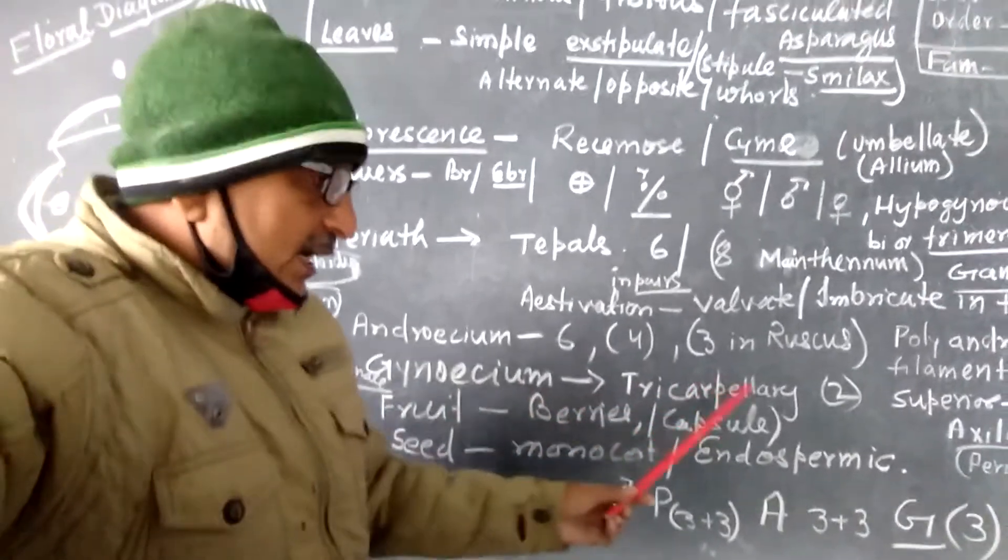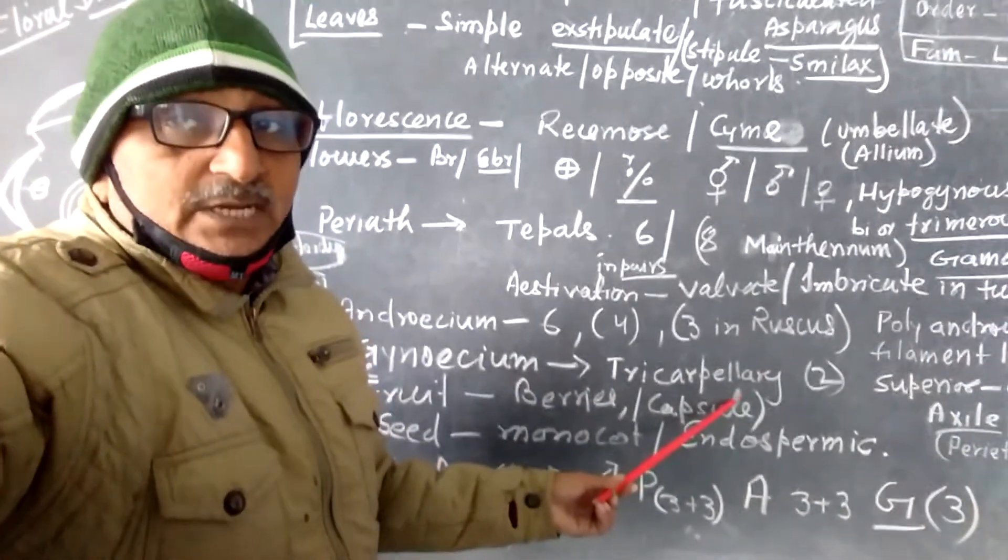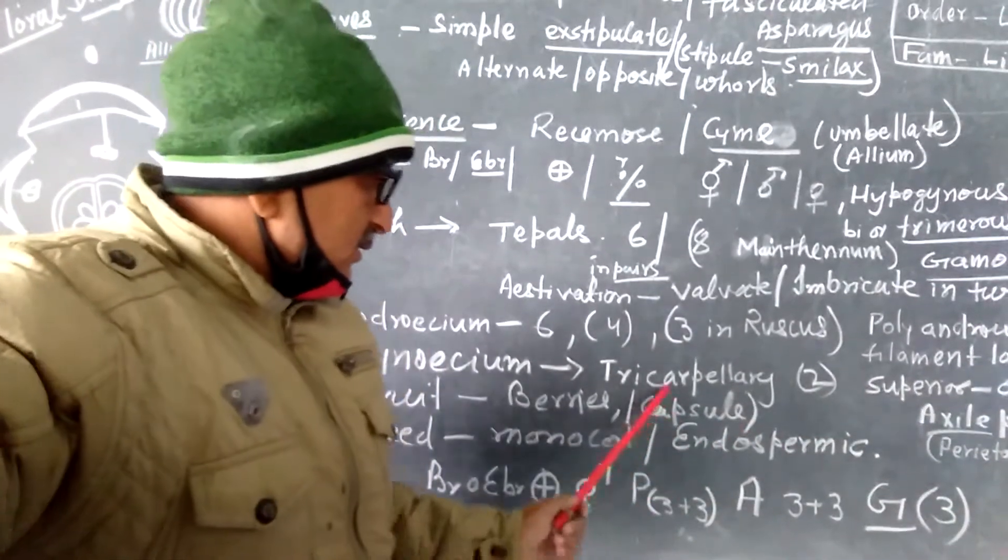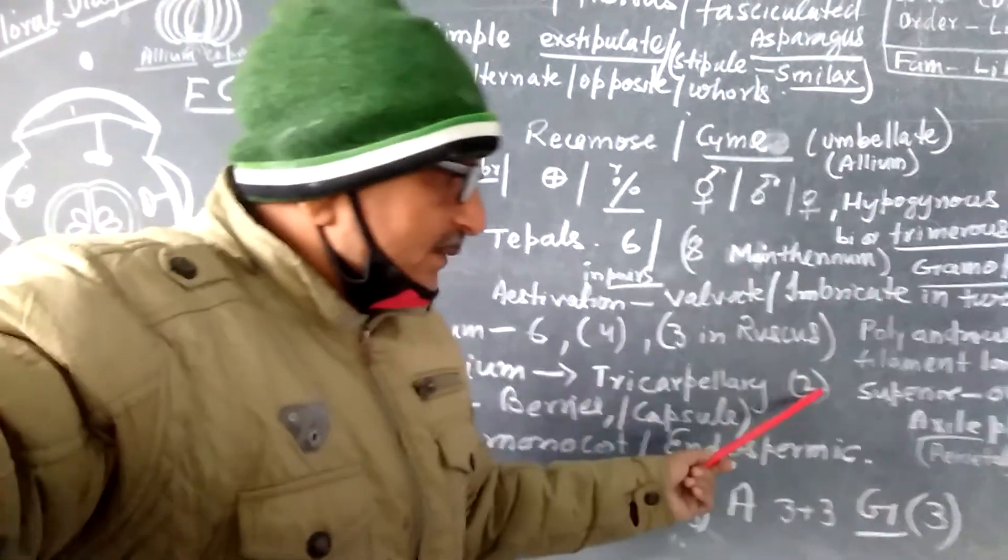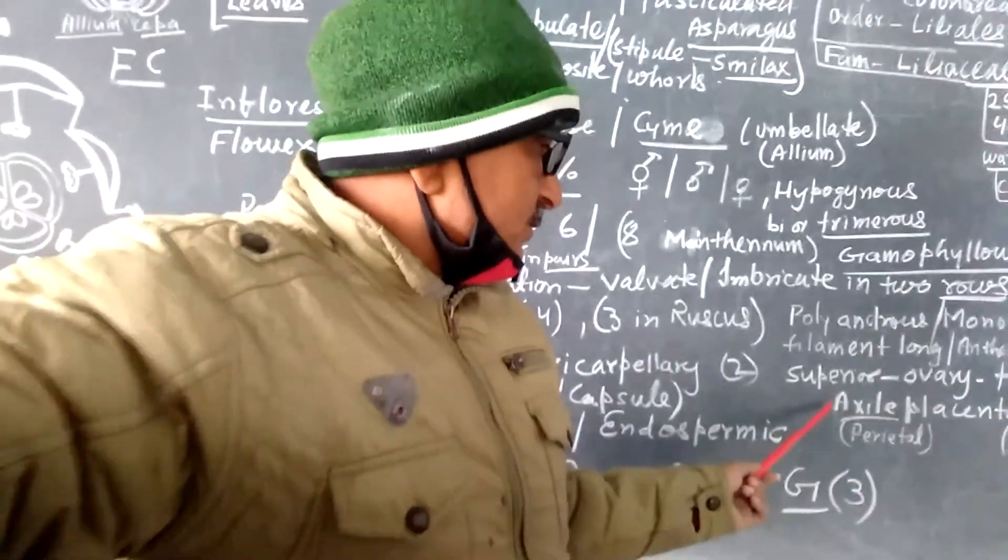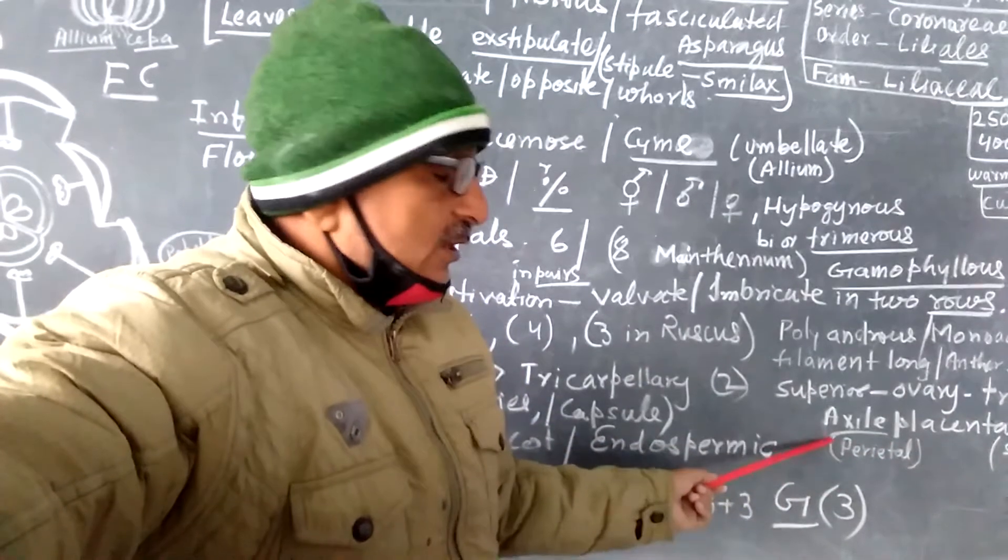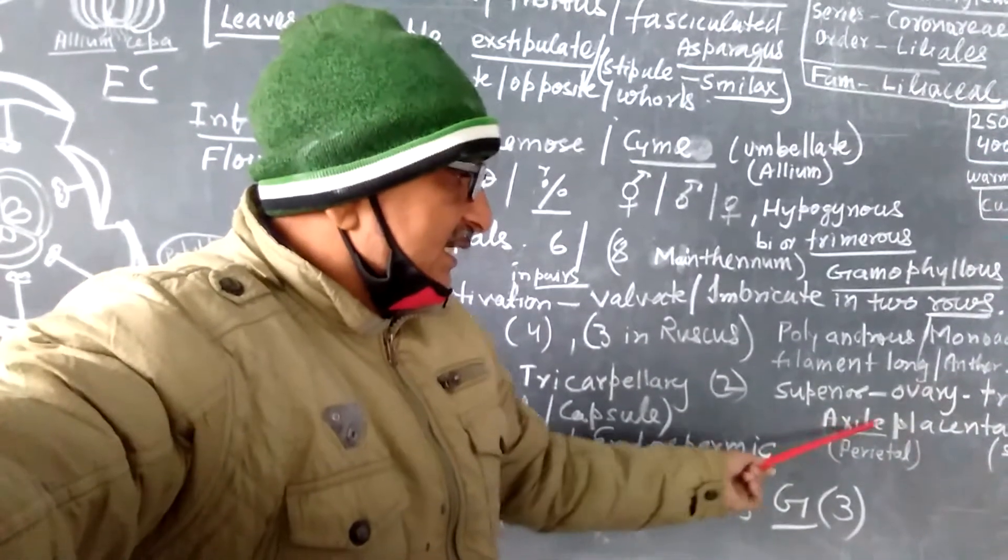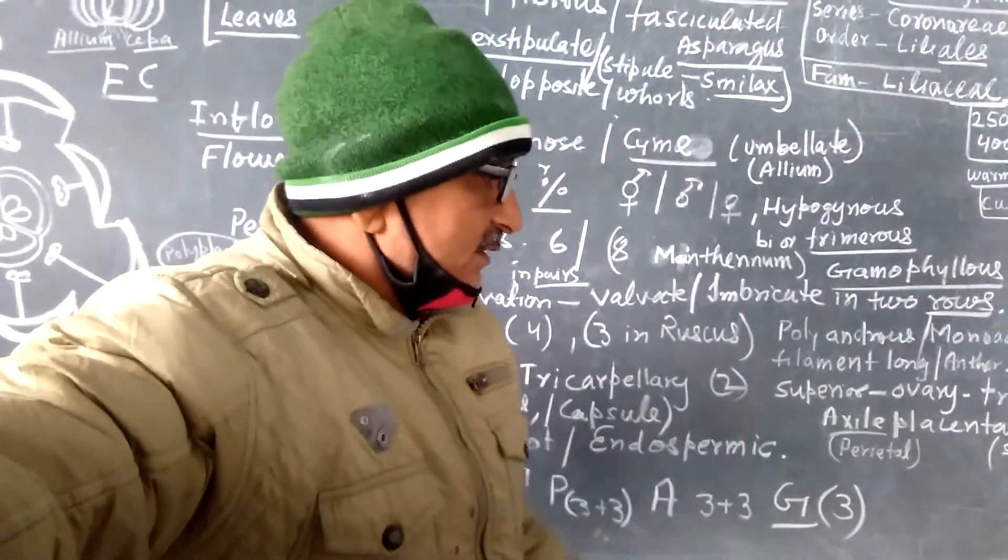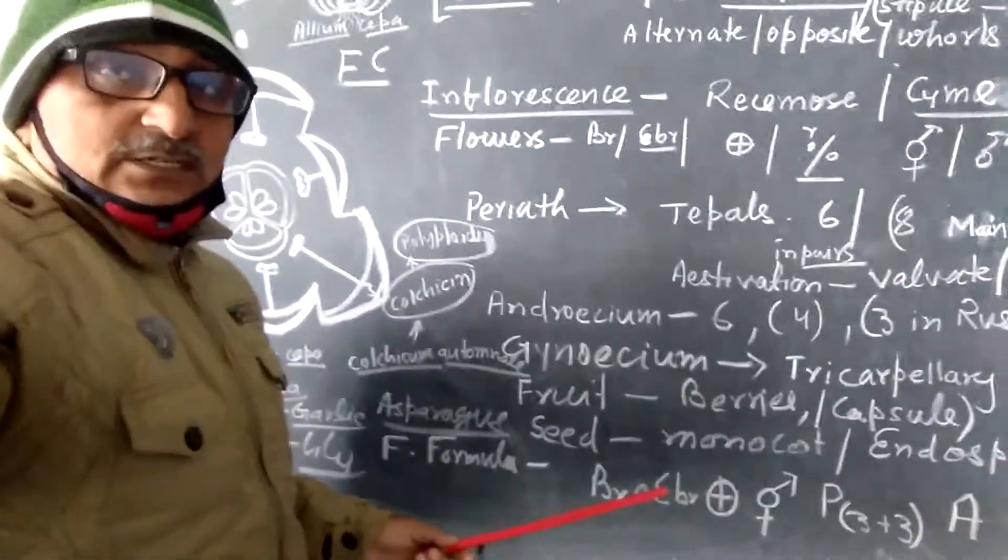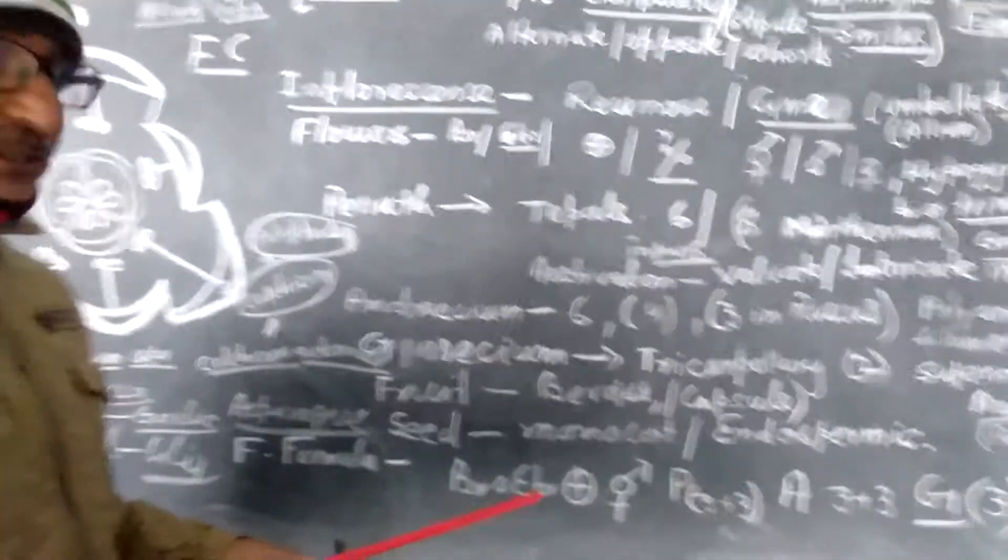Gynoecium is tricarpillary, three-chambered, ovary superior and syncarpous. Sometimes bicarpillary condition also forms. Placentation axile or ovules arranged as axile placentation, or sometimes parietal too. So these are the morphological characters.